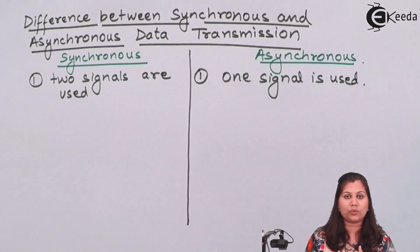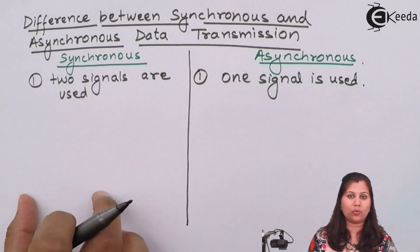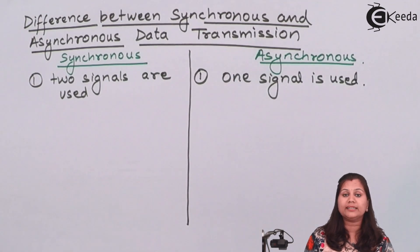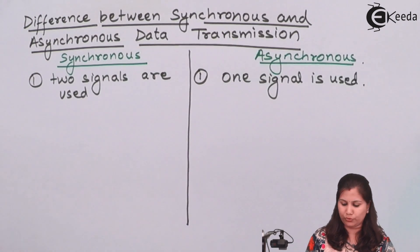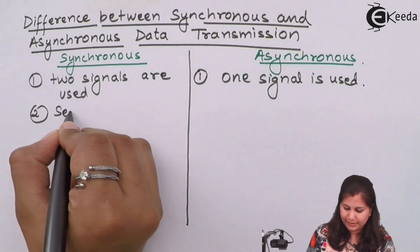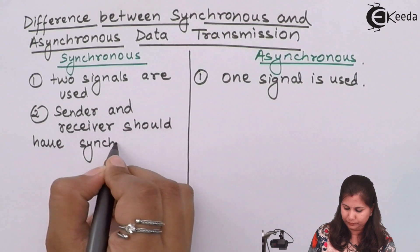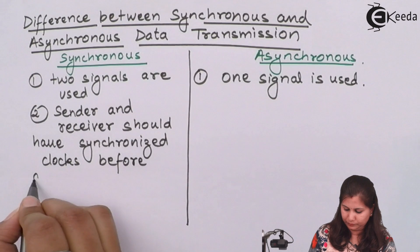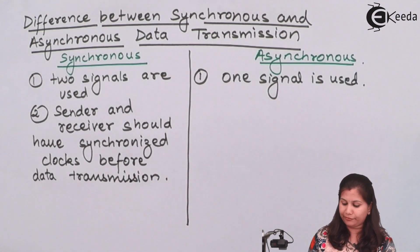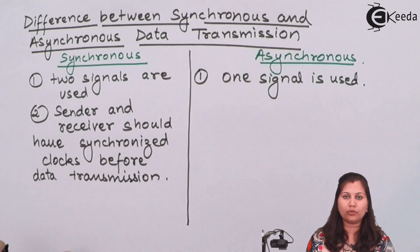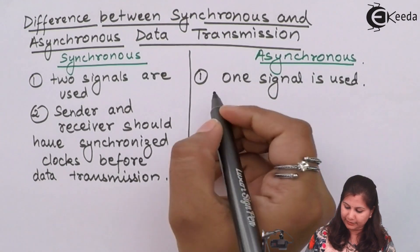In synchronous mode, the sender and receiver share a single common clock that is synchronized between them. Whereas in asynchronous, no external clock signal is required — the internal clocks of the sender and receiver are used instead. The second difference is that in synchronous, sender and receiver must have synchronized clocks before data transmission, requiring an external clock. In asynchronous, no clock synchronization is required.